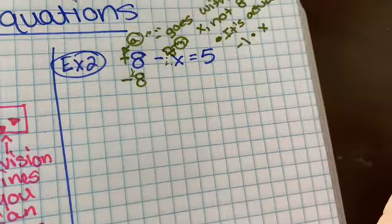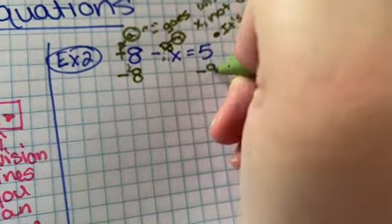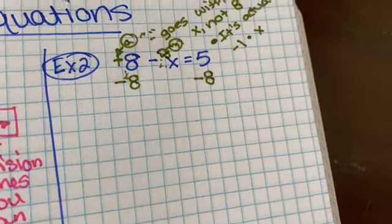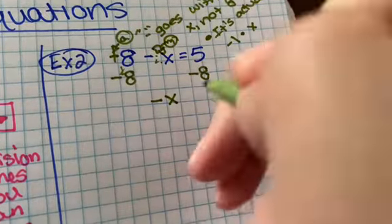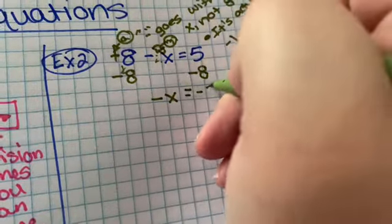So here, we minus eight, minus eight. So we bring down that negative x equals negative three.